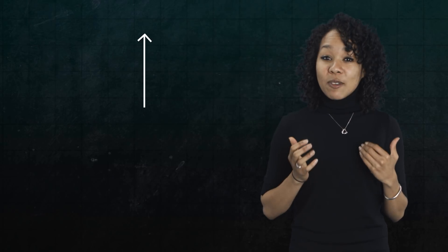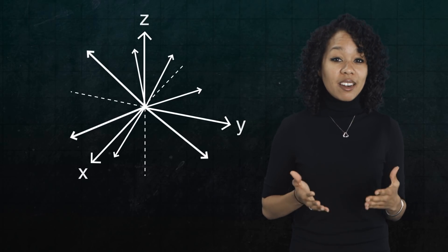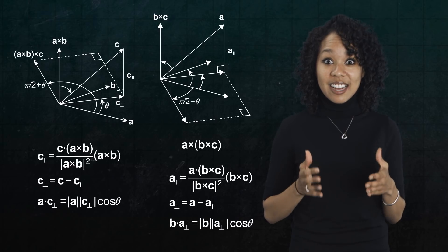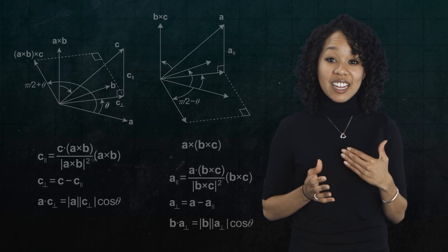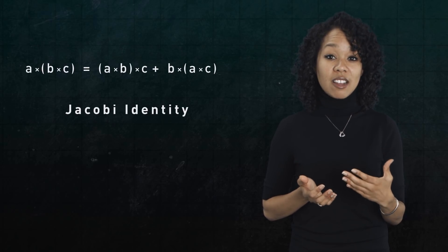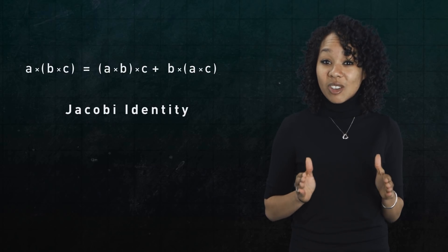But in mathematics, we can make sense of multiplication between things that aren't numbers. And in that context, we may not have associativity. For example, if you've heard about vectors, then you might know that the cross product in three-dimensional space is not associative. In fact, it satisfies something called the Jacobi identity. Notice, it almost looks associative, except there's that extra term.